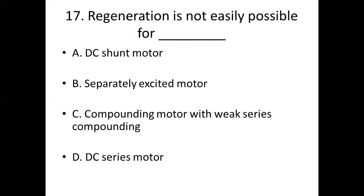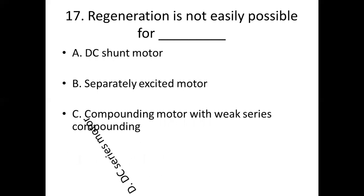Seventeenth one. Regeneration is not easily possible for dash. Option A: DC shunt motor. Option B: separately excited motor. Option C: compounding motor with weak series compounding. Option D: DC series motor. Answer: Option D, DC series motor.